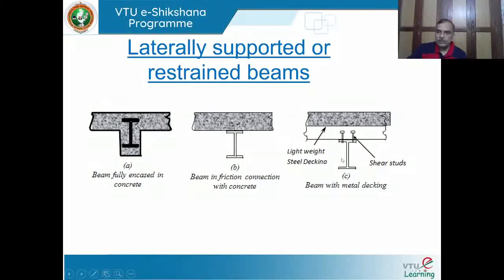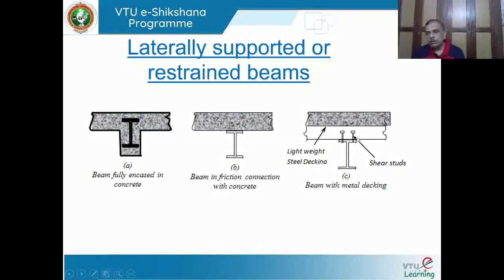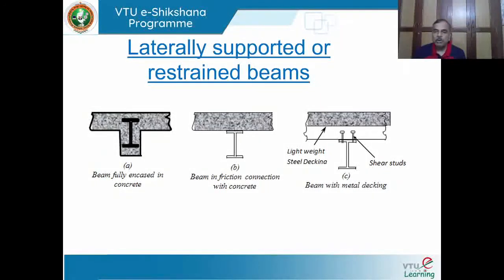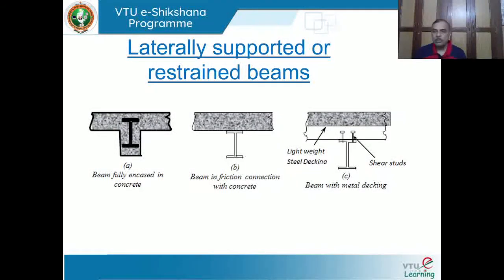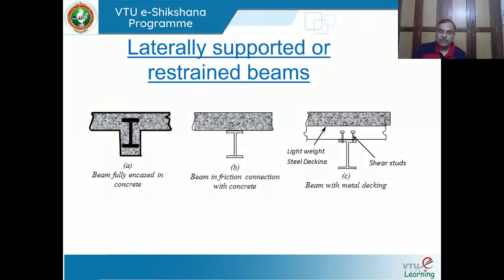Another situation uses shear studs welded along the beam length and embedded in concrete, substantially increasing resistance of the compression part. The I-section undergoes yielding with no lateral bending of the compression part - lateral buckling is prevented and restrained because of the type of support provided. Beam bending is confined to one plane with nothing happening in the lateral direction.